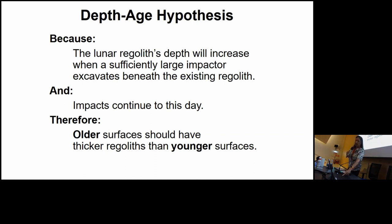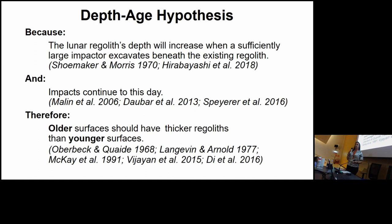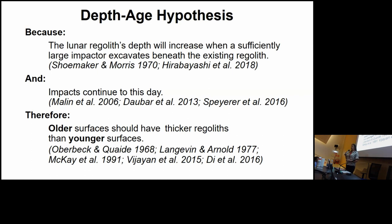On the next slide I have added references to show this is well-established. Shoemaker and Morris back in 1970 have multiple papers about the lunar regolith, justifying that it is formed primarily by impact and that regolith depth grows as impacts excavate beneath the existing regolith. More recently, Hirabayashi in 2018 also makes this specific assertion.